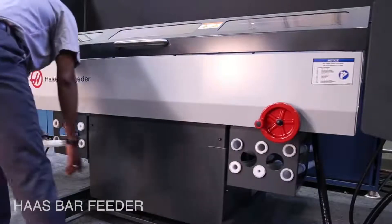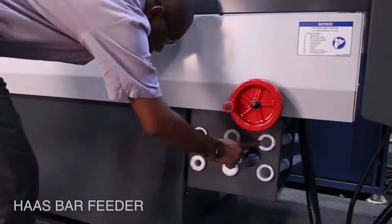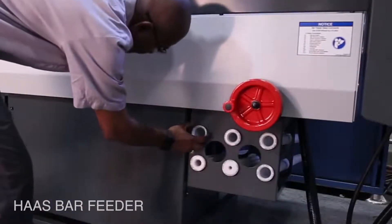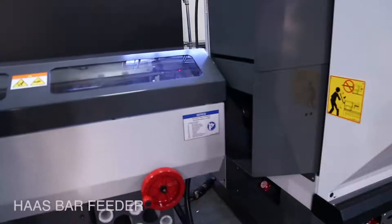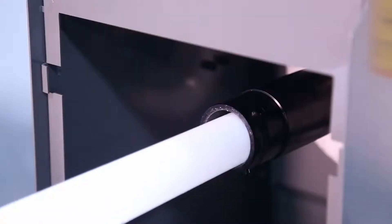Changing out spindle liners is simple thanks to its unique design. Quickly find the liner you need from where they're conveniently stored at the front panel. Slide the unit back and out of the way to gain full access to swap them out.